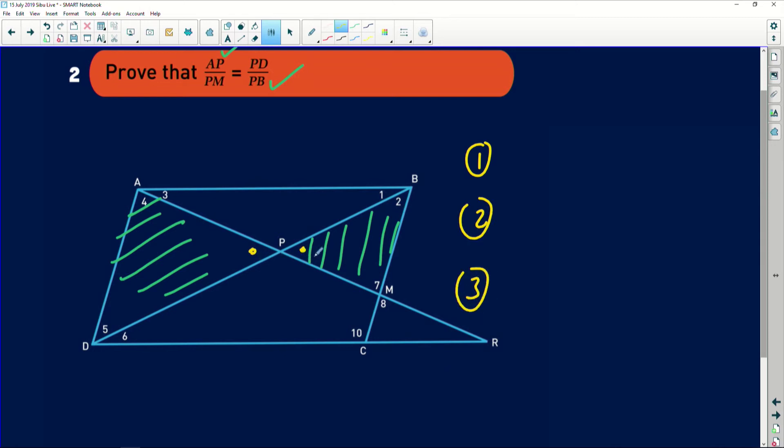Once we have proven that they're similar to each other, we can then claim that their corresponding sides are of equal proportion. Remember, you must find three things in those triangles that are equal. Number one, this angle is equal to that one. So angle APD is equal to angle BPM. Those angles are equal because they are vertically opposite to each other.